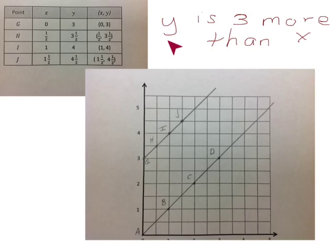Whenever we write a rule that explains the relationship between x and y coordinates, we have to be sure and include both the x and the y in our rule. Our rule then: y is 3 more than x.